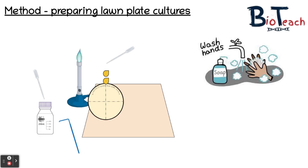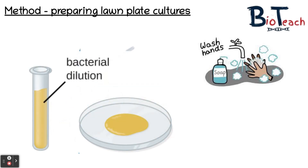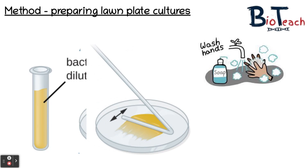The sterile spreader you were provided with — you may need to unwrap it if it's in plastic wrapping. Facing the Bunsen, lift the lid of your agar plate with your non-dominant hand and use the spreader to spread the culture around the entire surface of the agar. You have to do this very lightly — agar is very fragile, so if you press down too hard you will break the agar surface, which will make it very difficult to grow the bacteria on that lawn culture. The agar surface needs to remain smooth, so spread very gently.